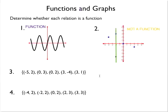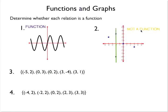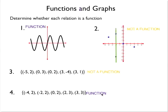Now let's determine if relations given as lists of points are functions by looking only at the x values. For number 3, the x values are -5, 0, 0, 3, and 3. Two points share the x value 0 and two points share the x value 3, each with different y values — so automatically, this is not a function. For number 4, the x values are -4, -2, 0, 2, and 3. All x values are different, so this would pass the vertical line test. This relation is a function — even though some y values repeat, we only look at the x values.